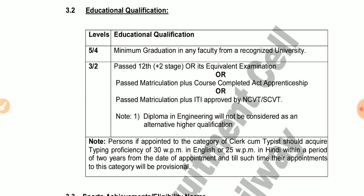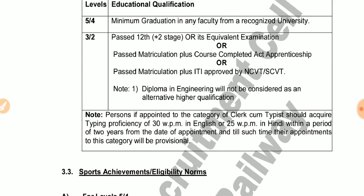The education qualification is a minimum degree at Level 5 by 4, which means Level 3 by 2. Candidates must have passed Matriculation plus completed an Act Apprenticeship, or passed Matriculation plus ITI approved by NCVT and SCVT.